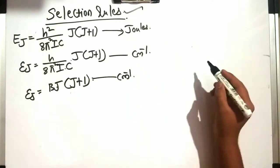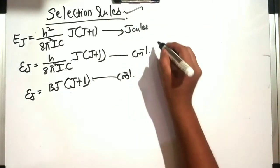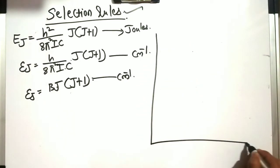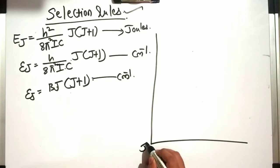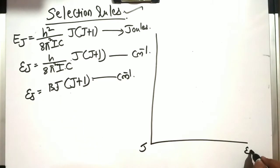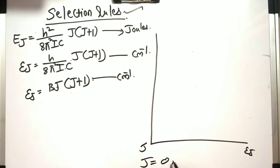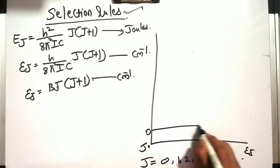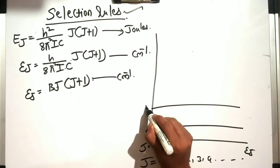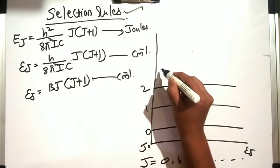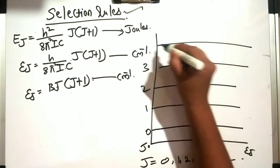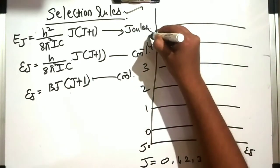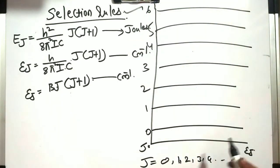To understand about the selection rules, we will draw a graph with both axes. On one side we will have j values — 0, 1, 2, 3, 4 and so on — and on the other side we will have E_j. This is our graph.